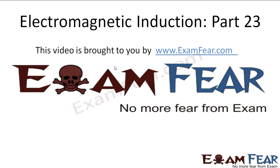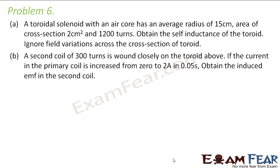Hello friends, this video on electromagnetic induction part 23 is brought to you by examfear.com — no more fear from exam. Please make sure that you have watched all the videos till part 22 before going ahead with part 23. Let us now look at the sixth problem. It says that a toroidal solenoid with an air core has an average radius of 15 centimeters, area of cross-section 2 centimeters squared, and 1200 turns. Obtain the self-inductance of the toroid, ignoring field variations across the cross-section.